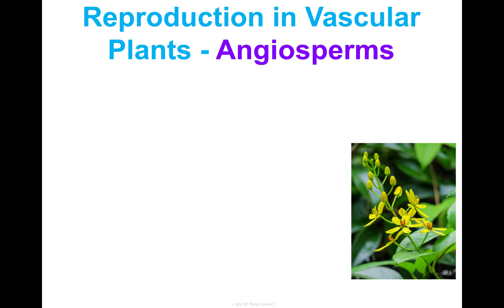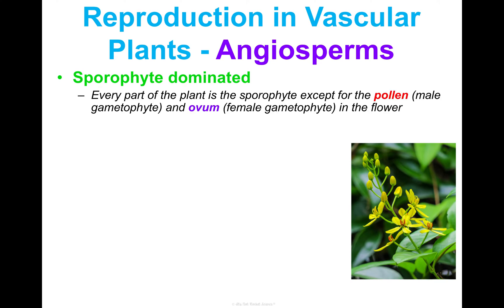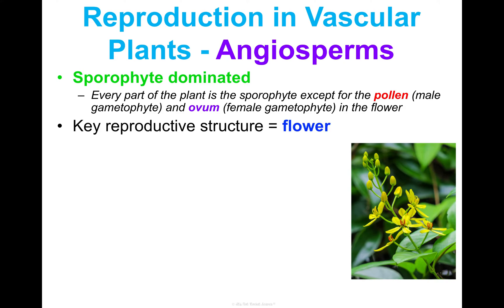Angiosperms are also sporophyte dominated. Every part of the plant is the sporophyte except for the pollen, which is the male gametophyte, and the ovum, which is the female gametophyte in the flower. But everything else is considered sporophyte.